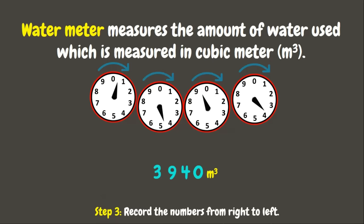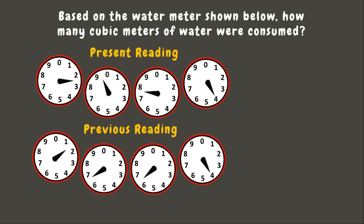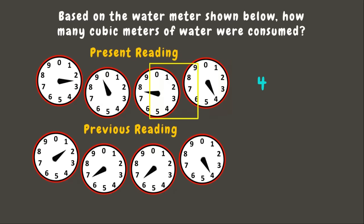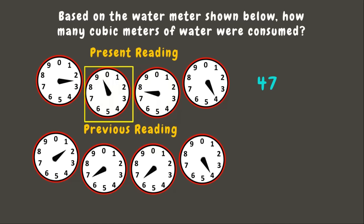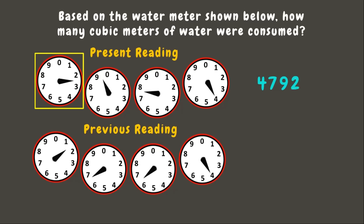Now let's go back to our problem. We read the present meter starting from the rightmost dial. The pointer points exactly at 4 — since there's no dial to its right, that's our first digit. Next it points between 7 and 8, so we record 7. The next pointer points between 9 and 0, and since it has not yet passed zero, we record 9. Lastly, the pointer points between 2 and 3, so we record 2. The present reading is 4,792 cubic meters.